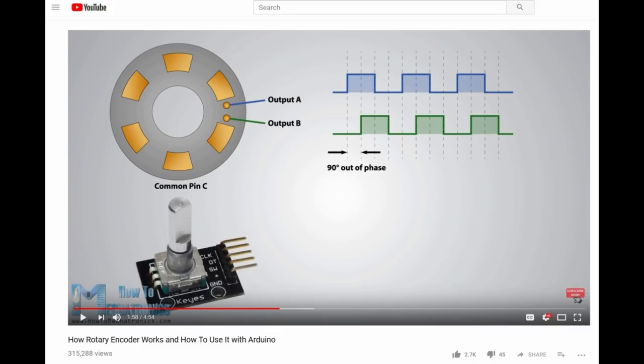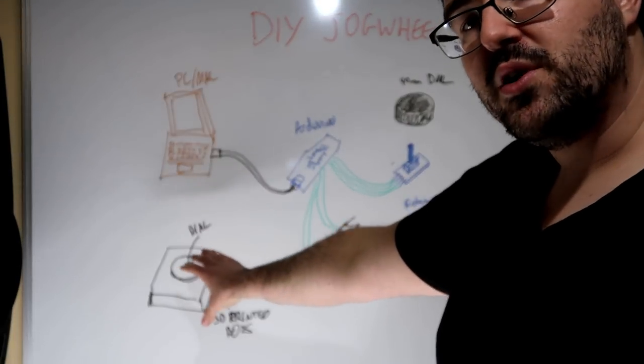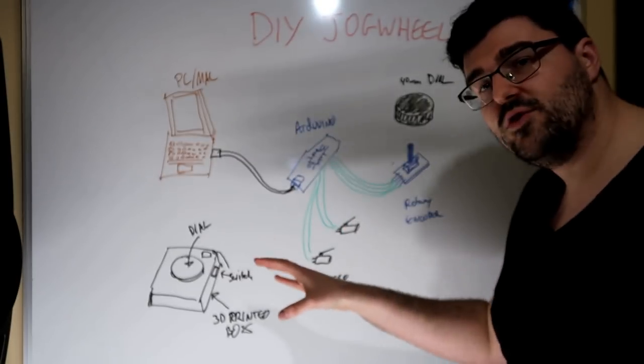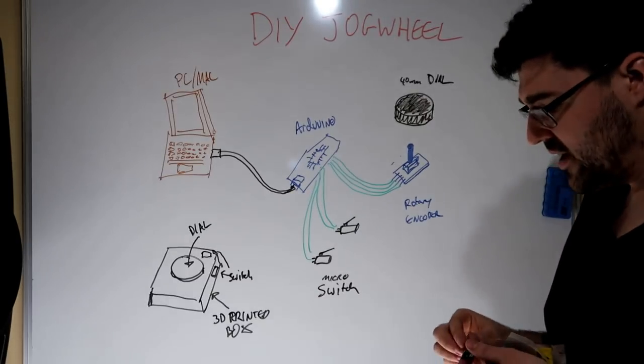Now if you want to understand a bit more about how a rotary encoder works, I've added a link down below to How To Mechatronics video which you can see here. It's a good explanation of how these things work, so go check that video out as well. With the actual box I'm going to put it in, it's probably going to be prototyped to begin with, so I might have a few tries to get that right.